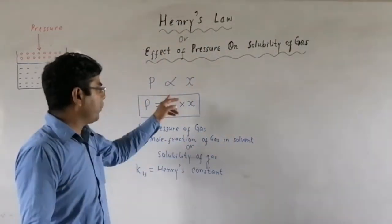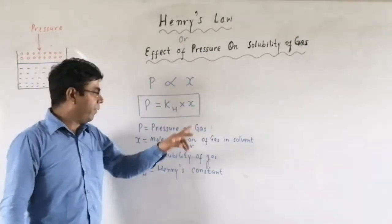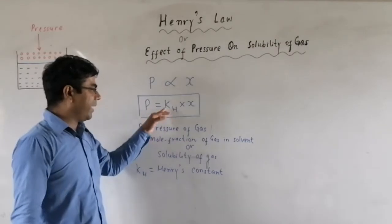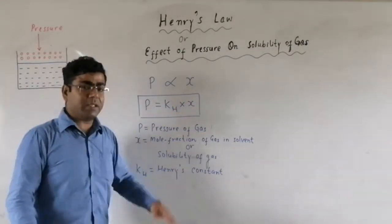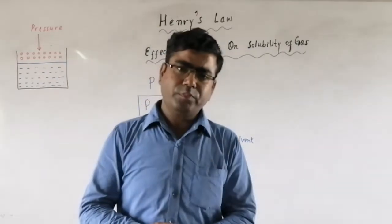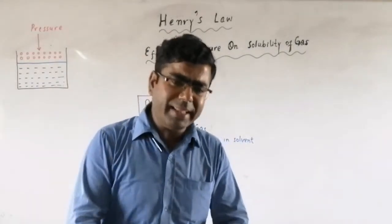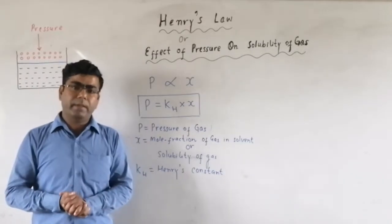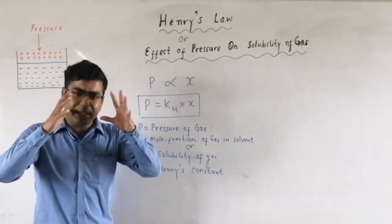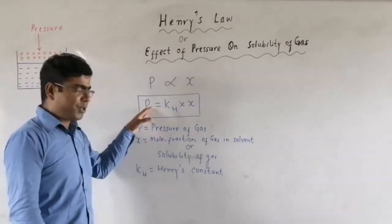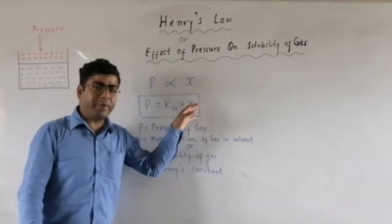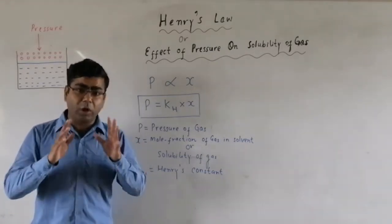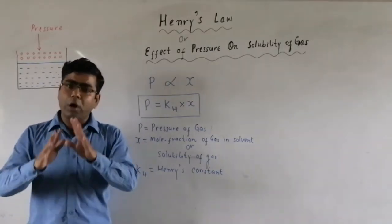Removing the sign of proportionality, we introduce a constant kH. So p can be written as p = kH × x, where kH is called Henry's constant. This mathematical expression is called Henry's law, which gives the quantitative relationship between pressure applied and solubility of the gas. The mole fraction x represents the solubility of gas in water or in any solvent.